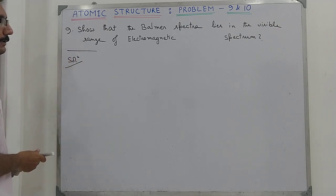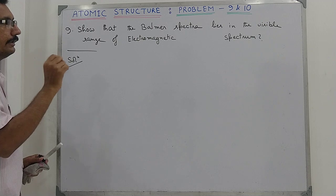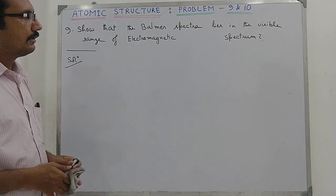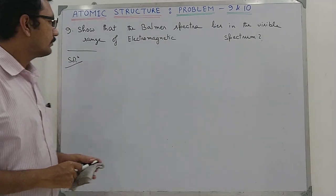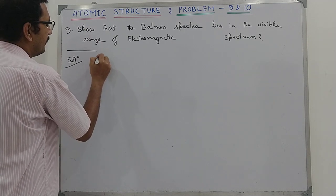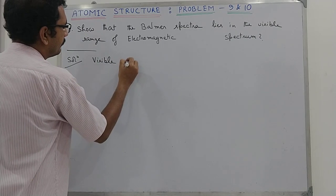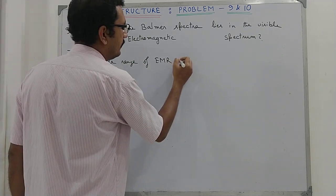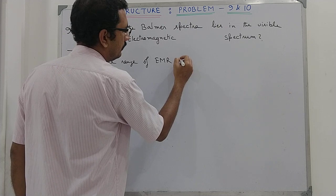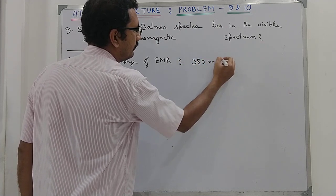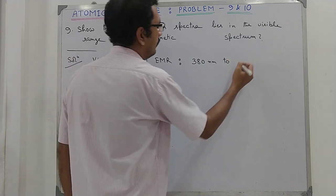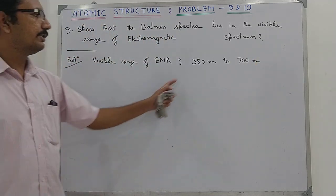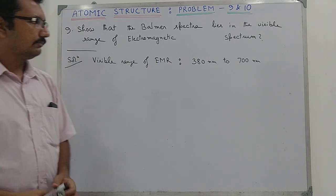To prove this, we have to find that the wavelengths associated with the line spectra of the Balmer series must lie within the visible range. The visible range of electromagnetic radiation is between 380 nanometers and 700 nanometers.